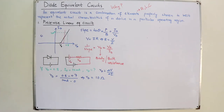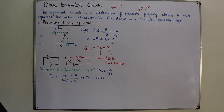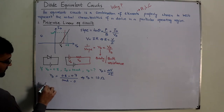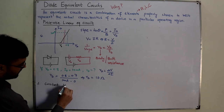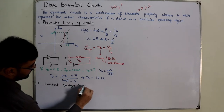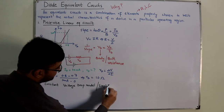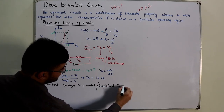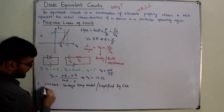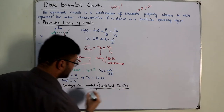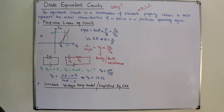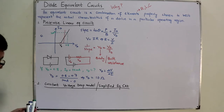Number 2 is the constant voltage drop model, also called the simplified equivalent circuit (CVD). In this case, the assumption is that we have a completely linear curve — a fully linear curve.